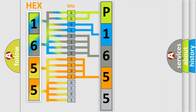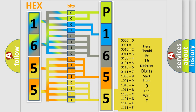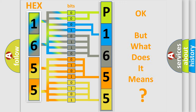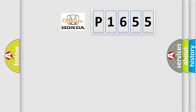A single byte conceals 256 possible combinations. We now know in what way the diagnostic tool translates the received information into a more comprehensible format. The number itself does not make sense if we cannot assign information about what it actually expresses. So, what does the Diagnostic Trouble Code P1655 interpret specifically for Honda car manufacturers?